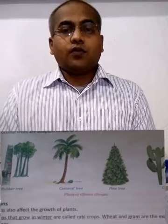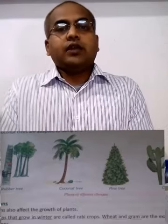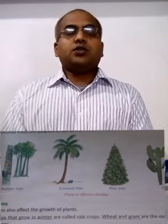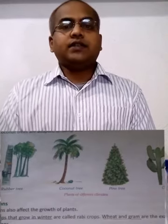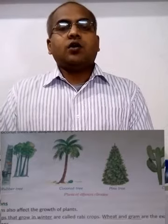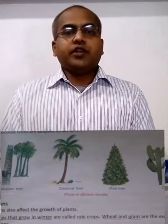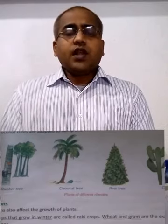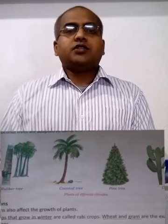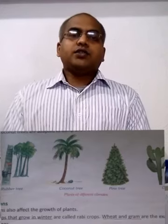Tea plants grow in hilly areas because water should flow away and not stay. Cotton plants grow in black soil, that is in the areas of Maharashtra. Wheat grows in the areas of Punjab, Chandigarh, and Uttar Pradesh. In this way, different plants need different types of soil.